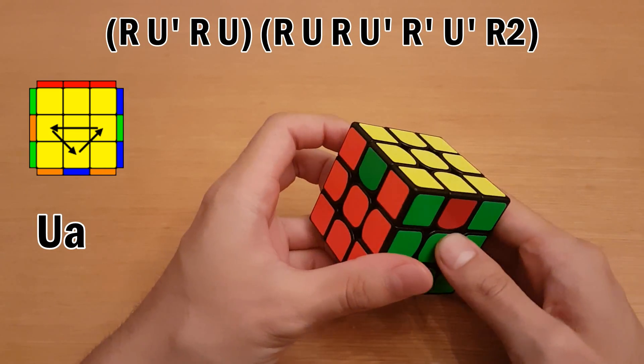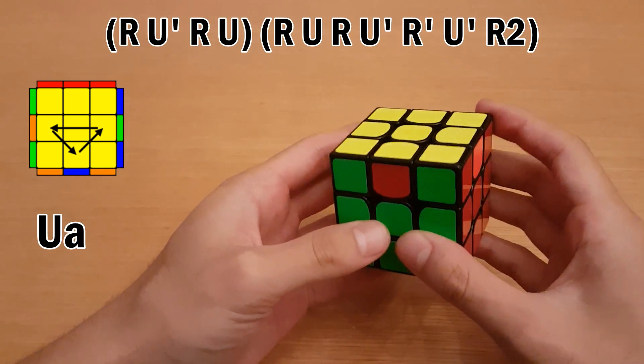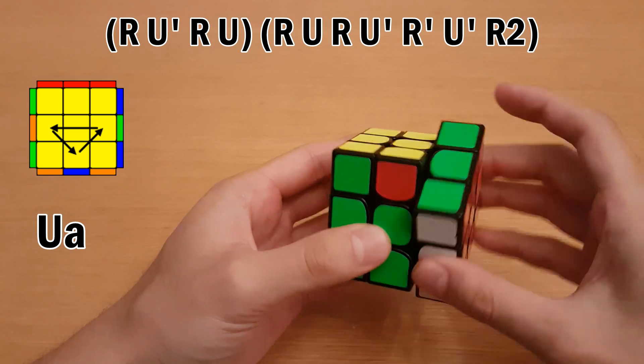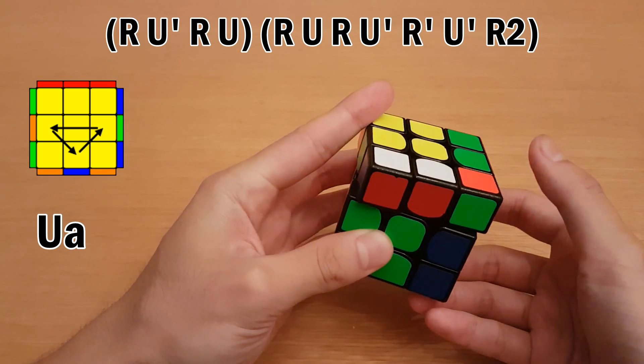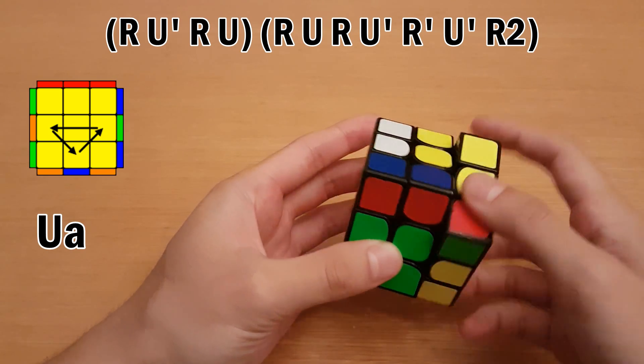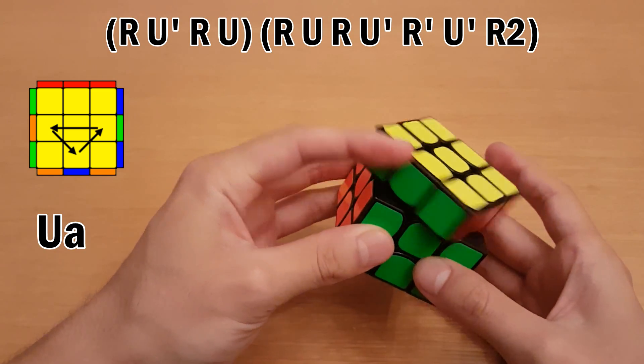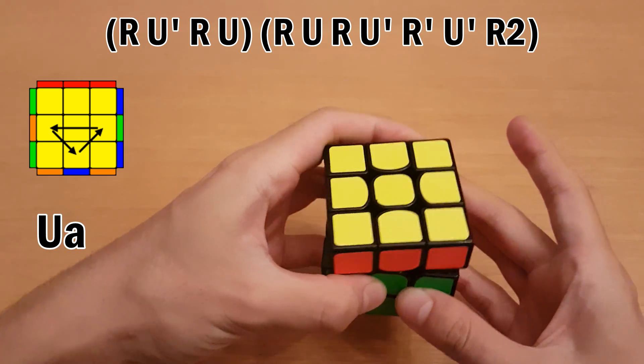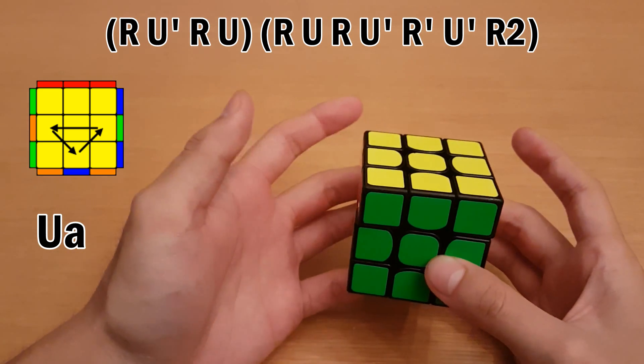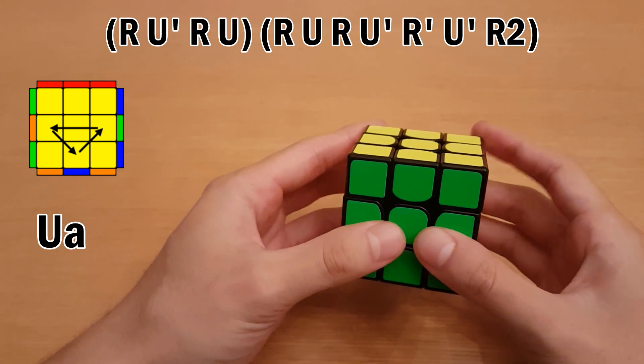Here we have the U-a permutation with the solved block at the back. So it goes like this. You can also replace this move with pushing at the back here, that also works, as long as you're doing it with your left hand. So now faster.